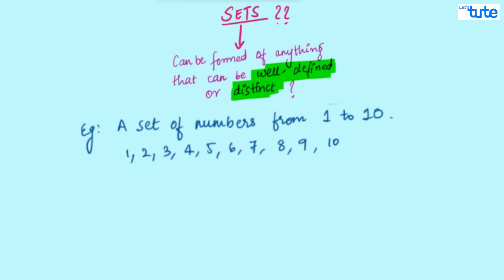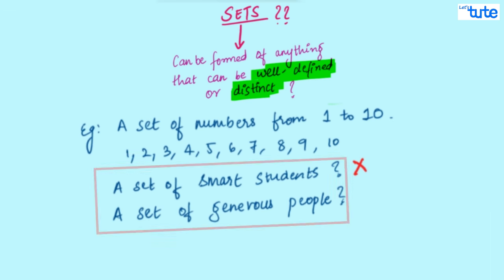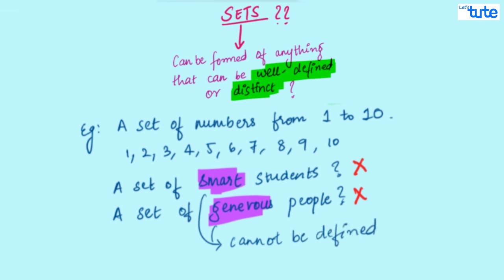Let's consider another example. A set of smart students or a set of generous people. Can this be considered as a set? No. Not exactly. Right? Because here, smart or generous cannot be defined or measured. Or, we can say that these are relative terms because the meaning of these words will change from individual to individual.